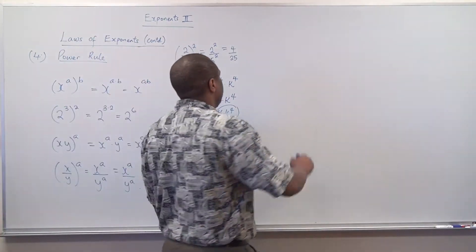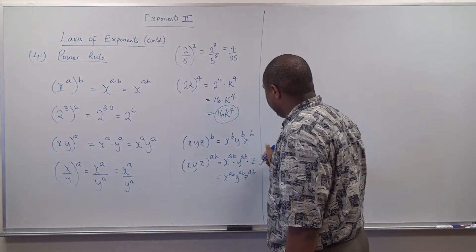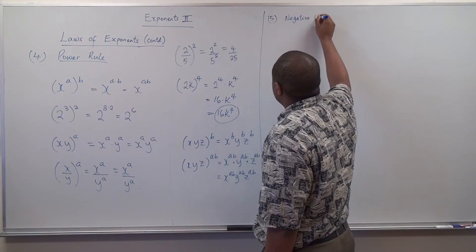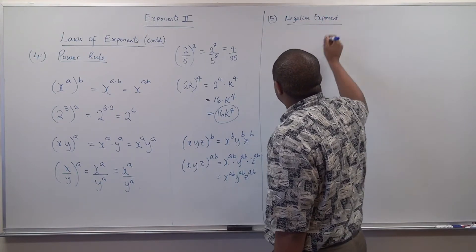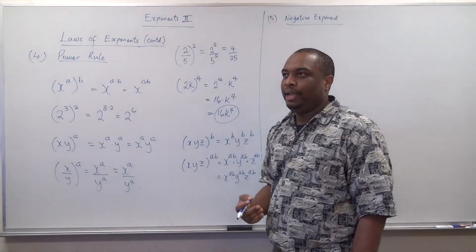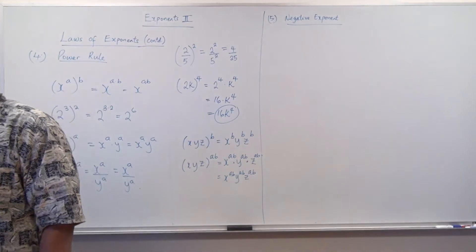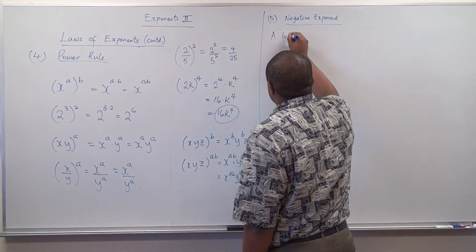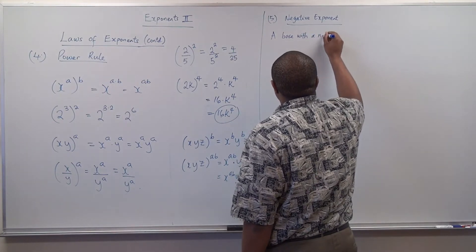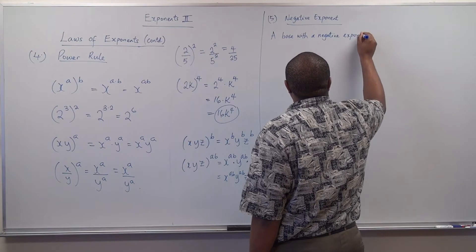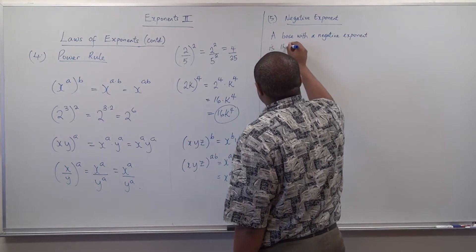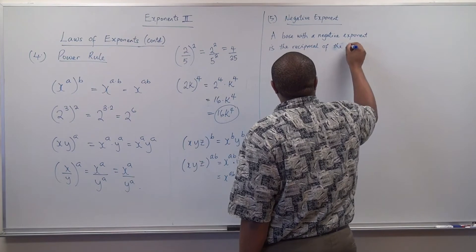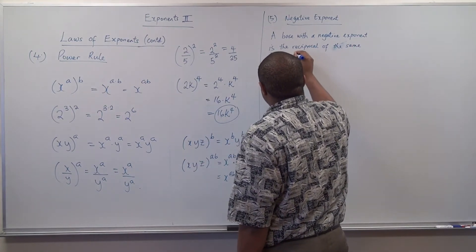That is the power rule. The next one we will talk about is the negative exponent. This is very important. A base with a negative exponent is the reciprocal of the same base with a positive exponent, and vice versa.